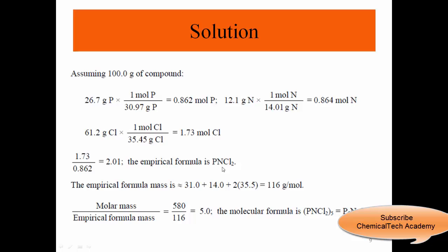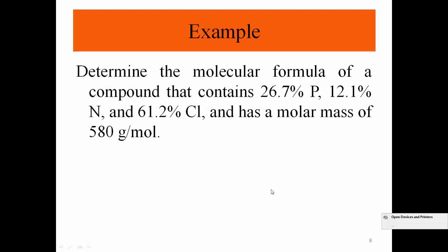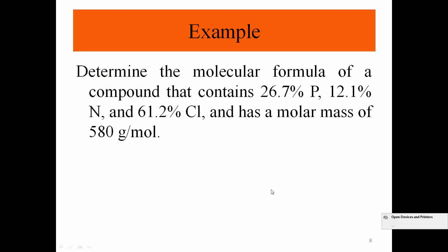Let's calculate the formula mass or formula weight. Phosphorus is 31, N is 14, Cl is 35.5 roughly times 2. So we get 116 grams per mole.